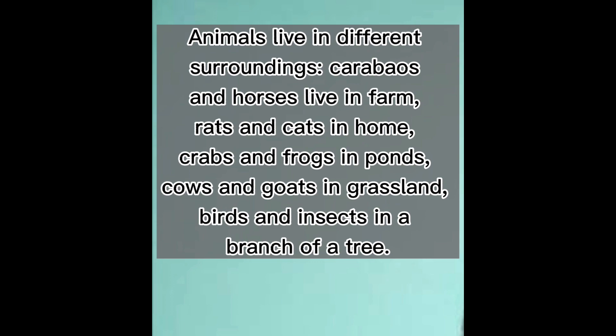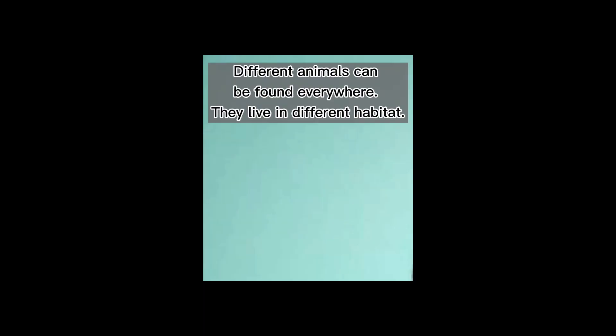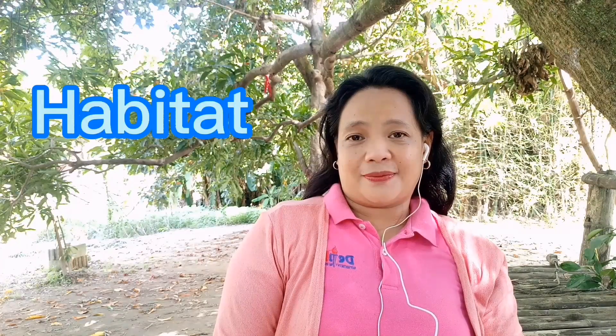Animals live in different surroundings. Carabaos and horses live on farms, rats and cats at home, crabs and frogs in ponds, cows and goats in grasslands, and birds and insects on branches of trees. Different animals can be found everywhere. They live in different habitats.